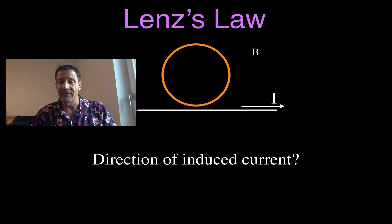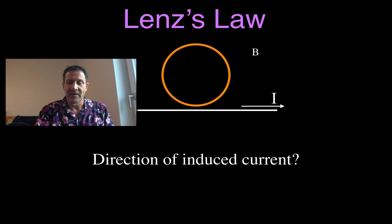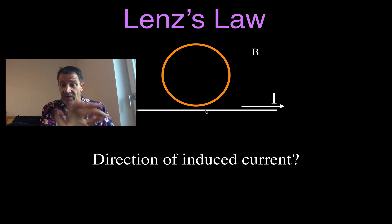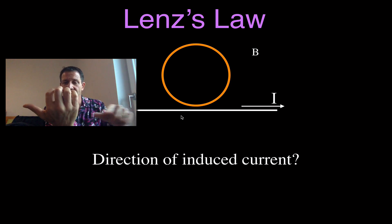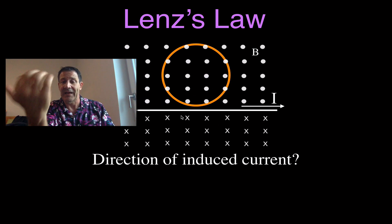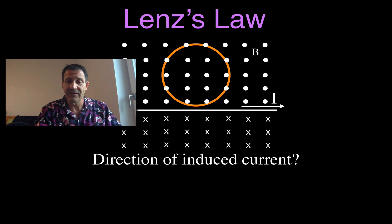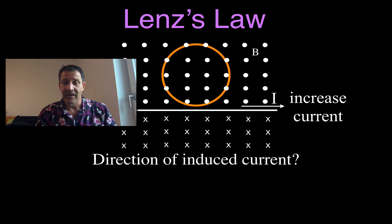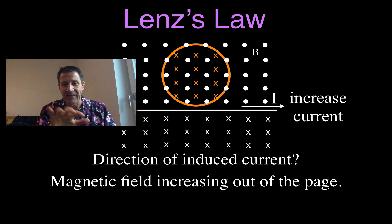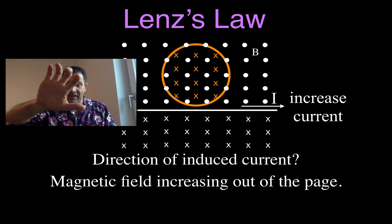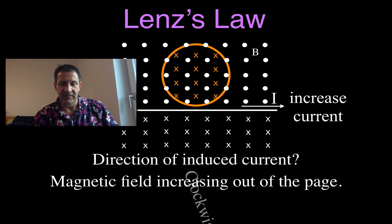Next example. You could pause the video here and try to figure out the answer yourself. We have our wire again with current flowing to the right. Point thumb to the right, wrap around the wire — above the wire, the magnetic field comes out of the page; below the wire, it goes into the page. We say the current is increasing, so where the coil is above the wire, the field is increasing out of the page. The coil produces magnetic field into the page to cancel it. Point fingers into the page inside the coil — my thumb points in the clockwise direction. The induced current is clockwise.